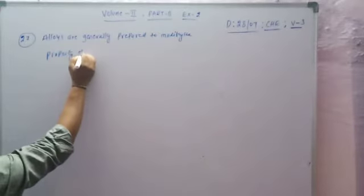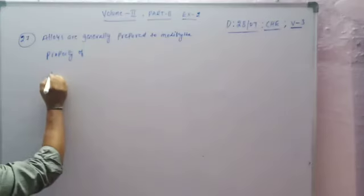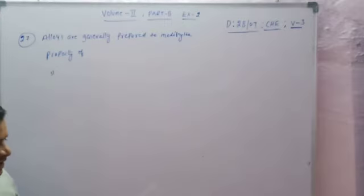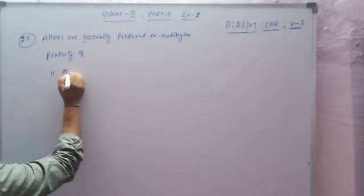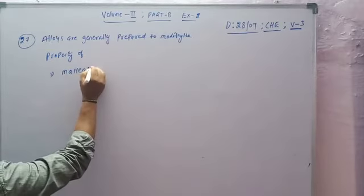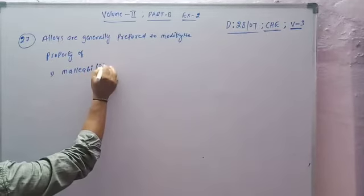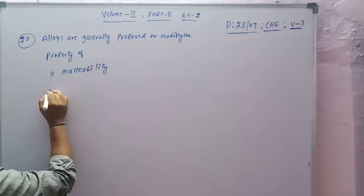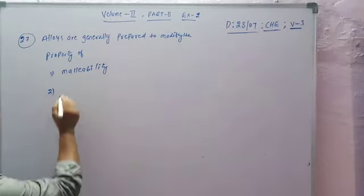The first property is malleability. The second one is toughness.